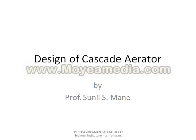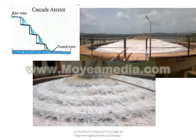Hello, this is Surid Mane. I am explaining regarding the design of a cascade aerator. The cascade aerator looks like this — it has various types of steps from which water is allowed to fall down. Water comes in contact with air, which is absorbed into it, and unwanted gases are removed.